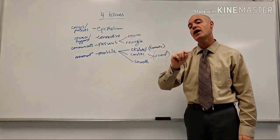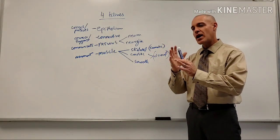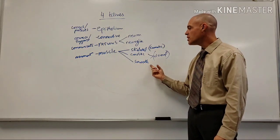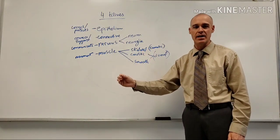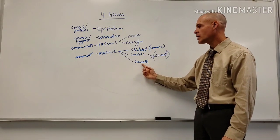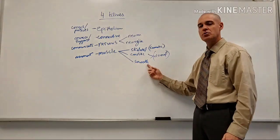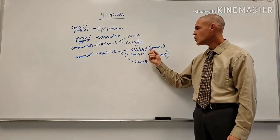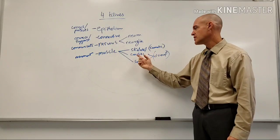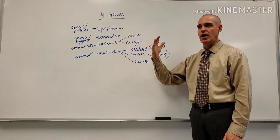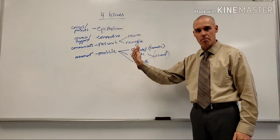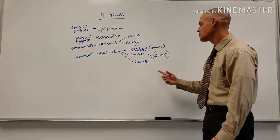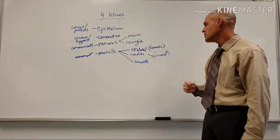Cardiac muscle is found only in the heart. It fires on its own so it's involuntary, has a single nucleus, and is striated - though striations are less vibrant than in skeletal muscle. Smooth muscle gets its name because it has no striations. All other organs except the heart contain smooth muscle. Smooth muscle can undergo mitosis and regenerate, unlike cardiac muscle. Smooth muscle has a single nucleus and is involuntary.